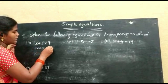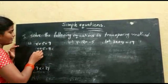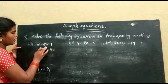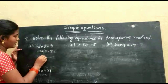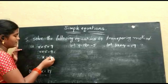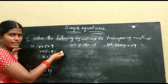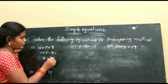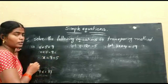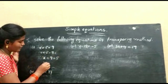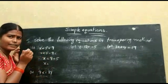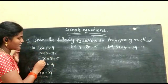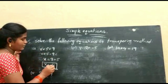First equation: x plus 5 is equal to 9. Using the transposing method, plus 5 moves to the RHS and becomes minus 5. So x is equal to 9 minus 5, which equals 4. Therefore x is equal to 4.